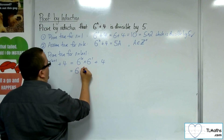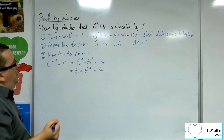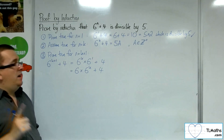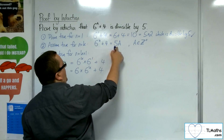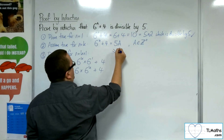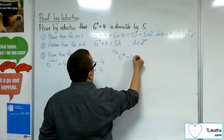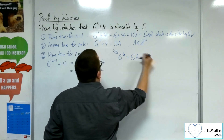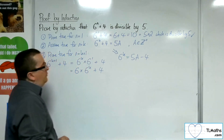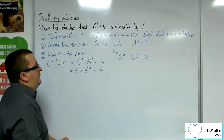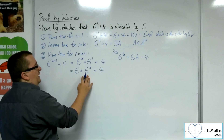So this is 6 lots of 6 to the k, plus 4. Now, I know from step 2 that 6 to the k plus 4 equals 5a. So if I subtract 4 from both sides, then 6 to the k equals 5a minus 4. If that statement is true, I can substitute that in for my 6 to the k.